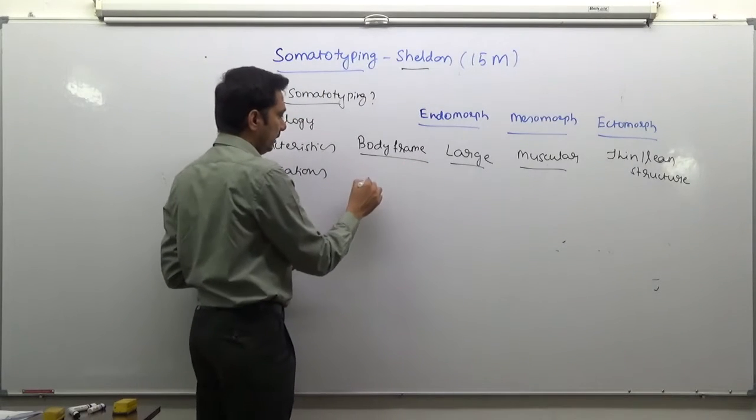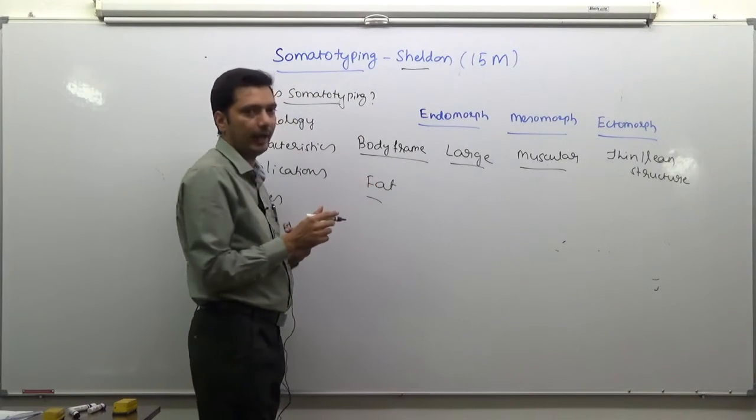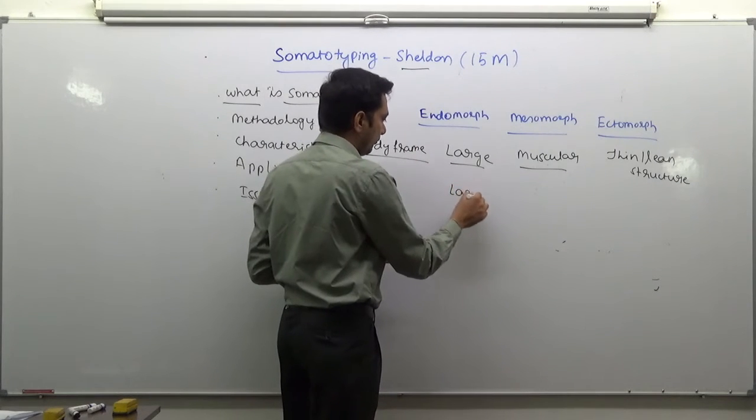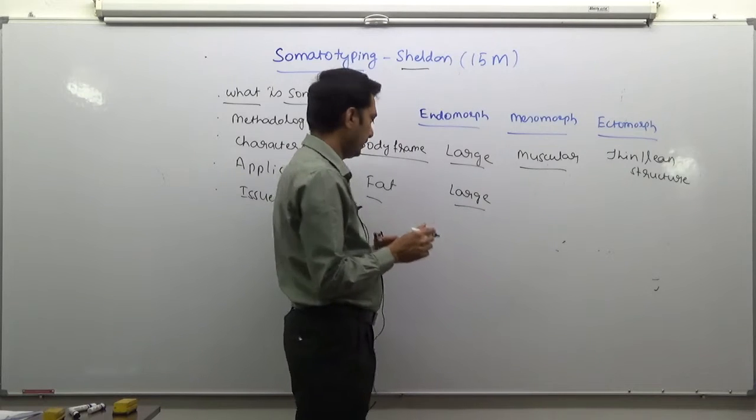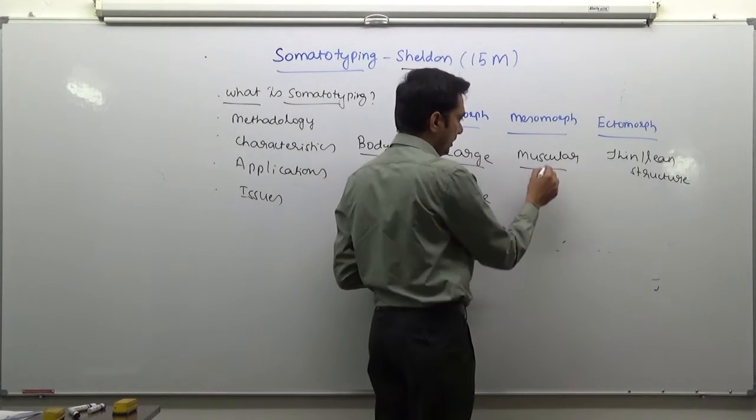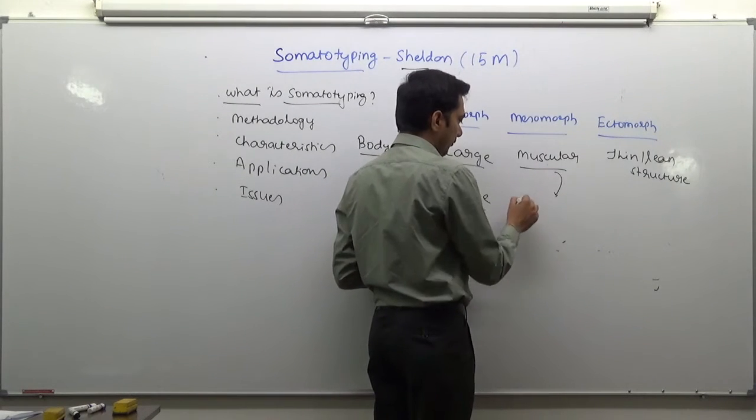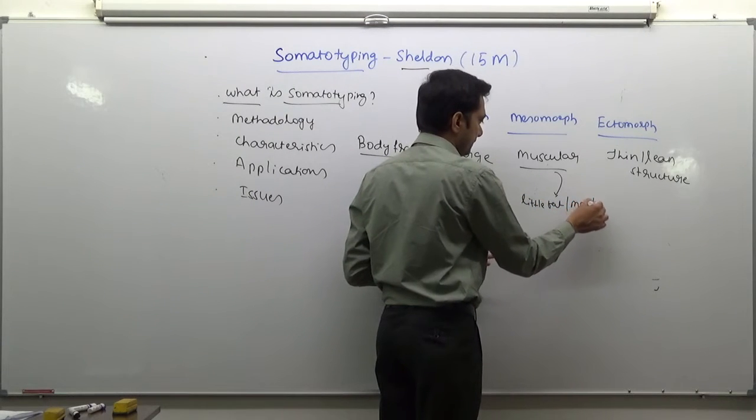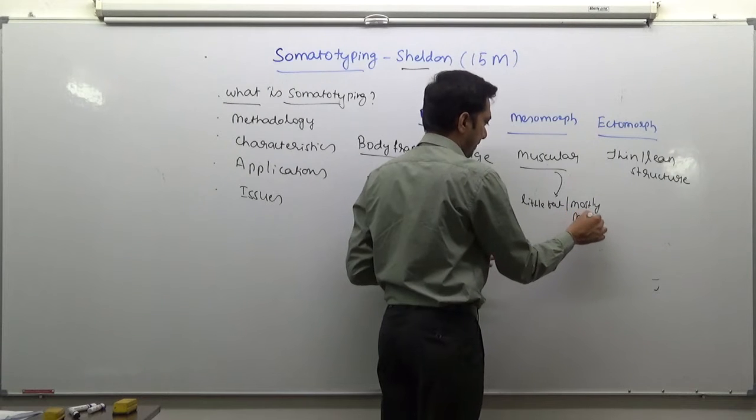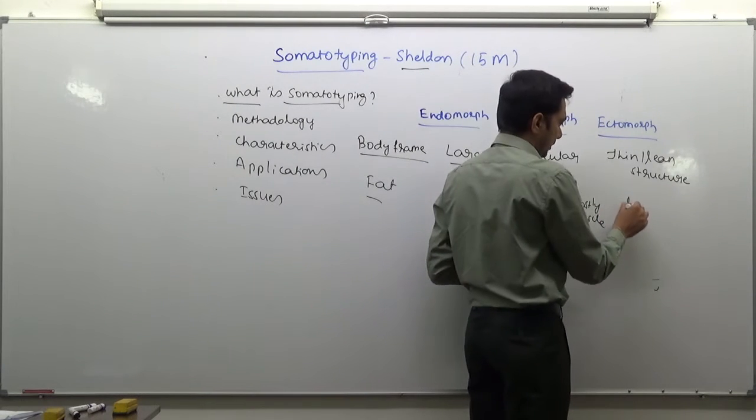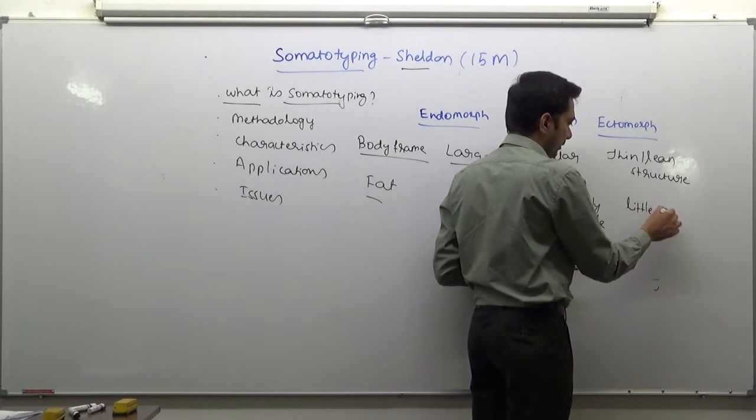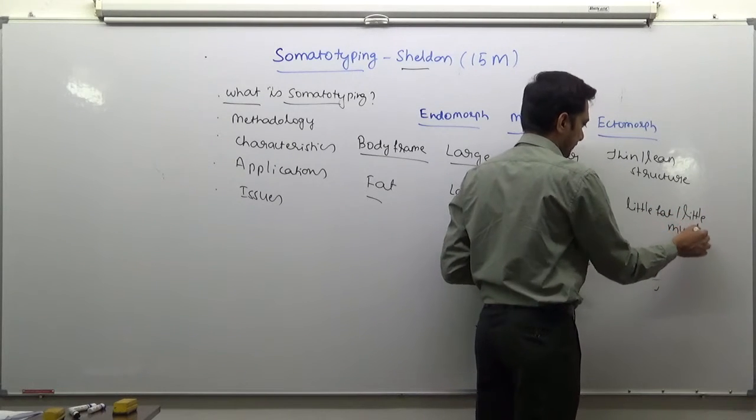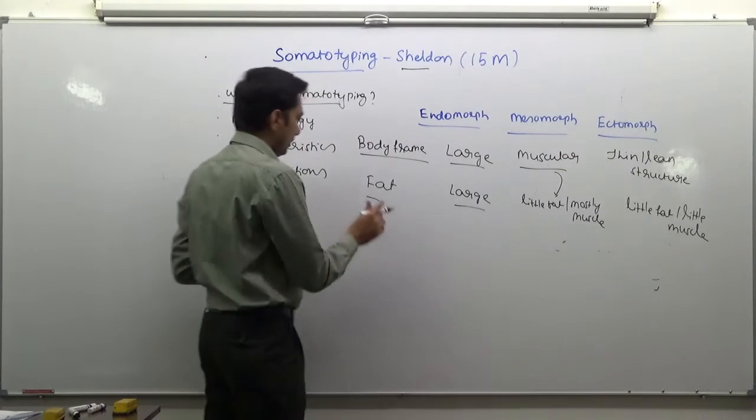Looking at fat content in these three categories: endomorphs have large amounts of fat, mesomorphs have very little fat and mostly muscles, and ectomorphs have little fat and little muscle.